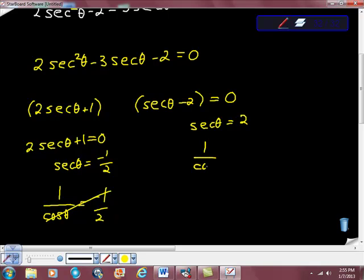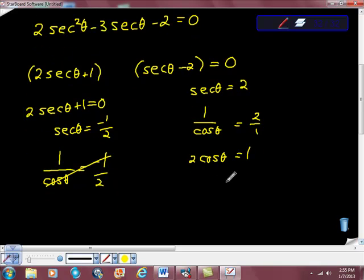But this is going to work out for us. So look at this as 1 over cosine theta is equal to 2 over 1. You can cross multiply if you want and get 2 cosine theta is equal to 1. Divide both sides by 2 and get cosine theta is equal to 1 half. Of course, that is true because 1 over 1 half would be 2, wouldn't it?